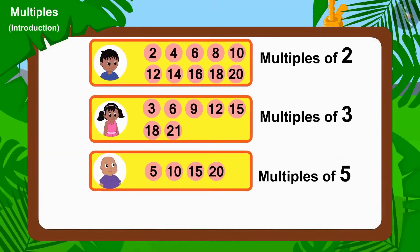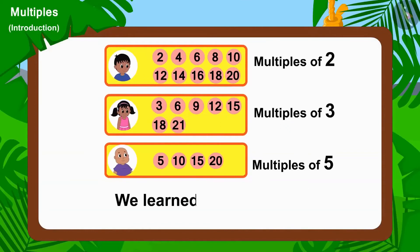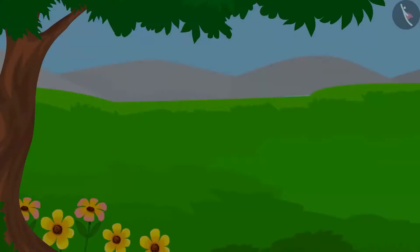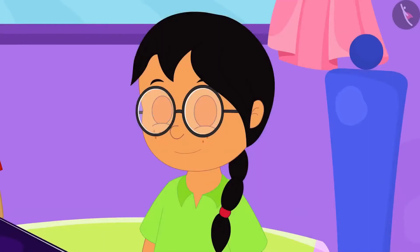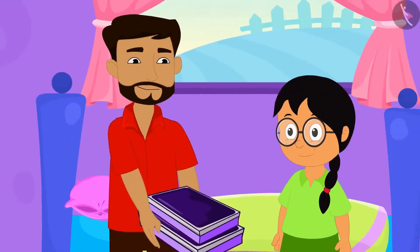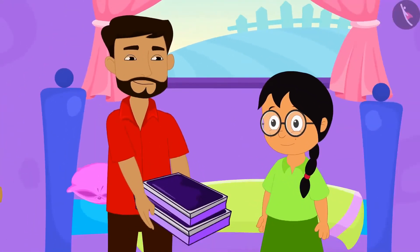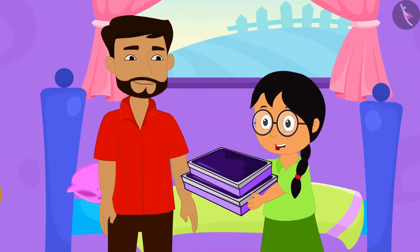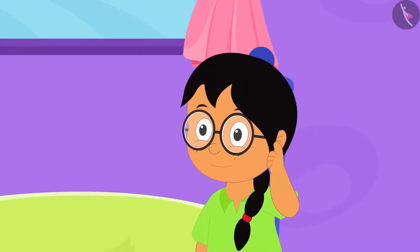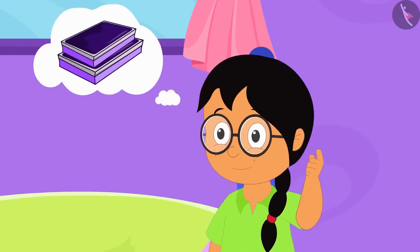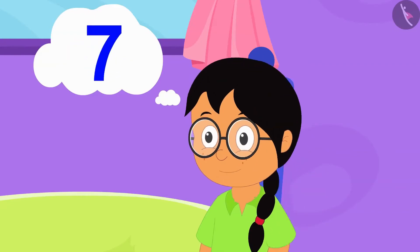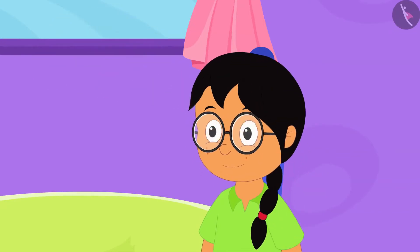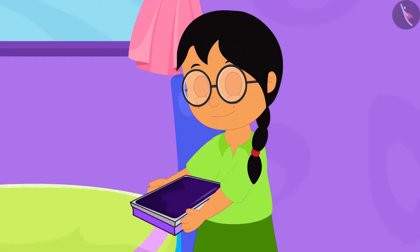Hello children, in the last video, we learned about multiples. Today, Meenu's uncle has come from abroad. He has brought various toffees for Meenu and her friends. Meenu is thinking that she will divide those toffees using groups of 3, 4, 5 or 7 in such a way that no toffee is left.